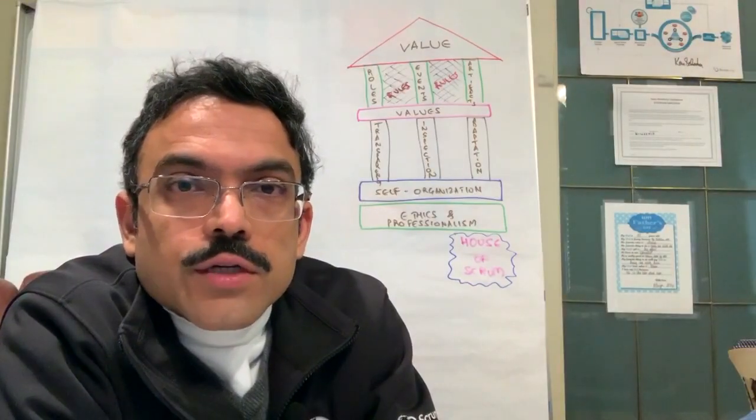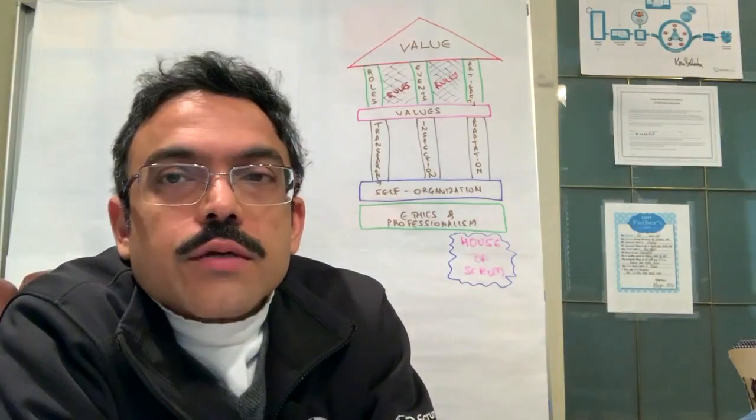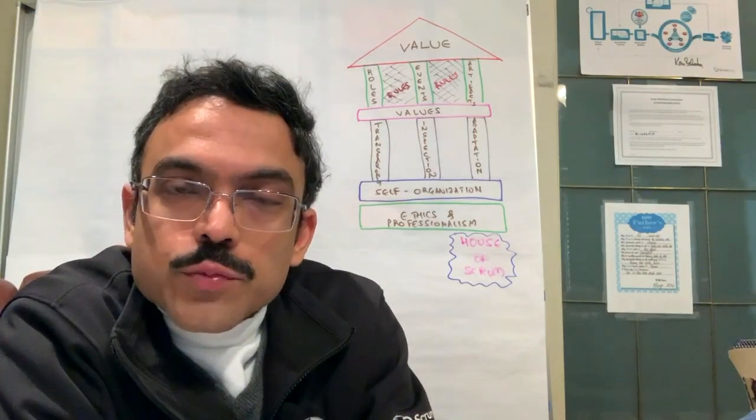My name is Ravi Verma. I am a Scrum.org professional Scrum trainer and I am the founder and Org whisperer at SmoothApps.